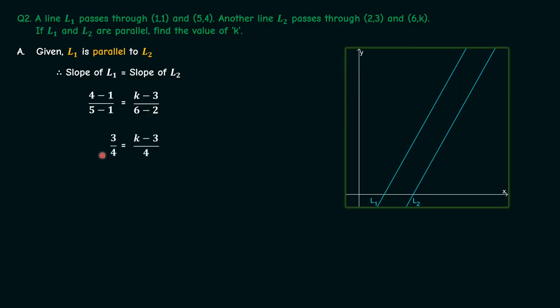Simplifying this we get 3/4 equals (k-3)/4. The fours can be cancelled out and we get 3 equals k-3, which means that k equals 6.